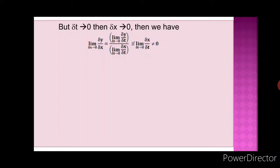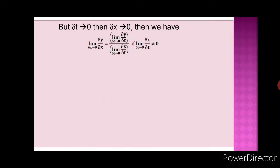The limit of a quotient is equal to the quotient of the limits, provided the limit in the denominator is not zero. This is the condition we need. We call this relation equation 2.